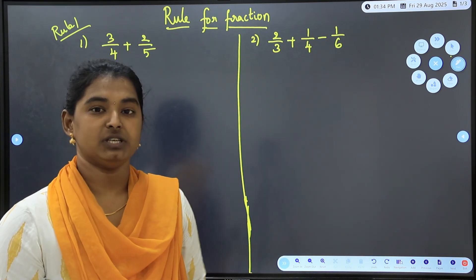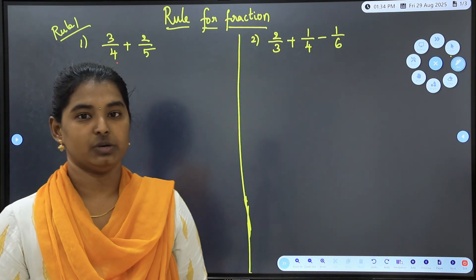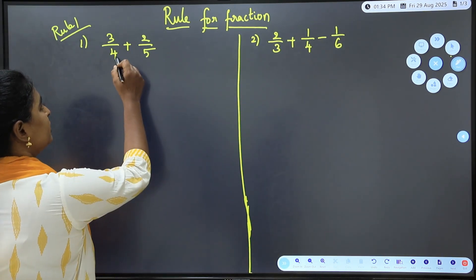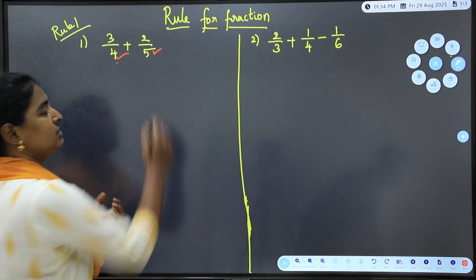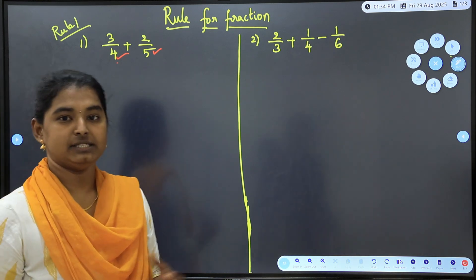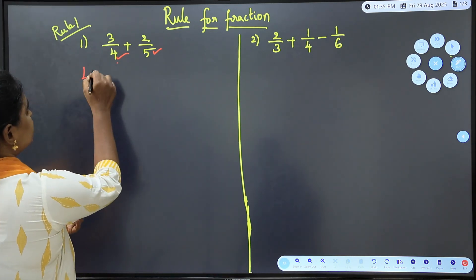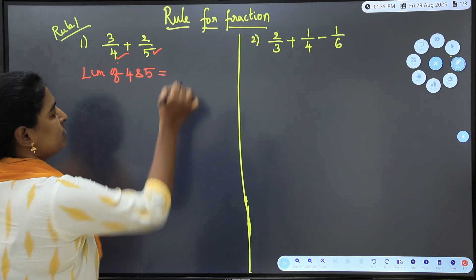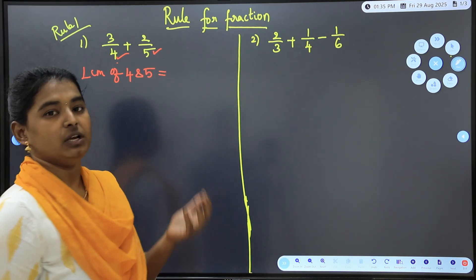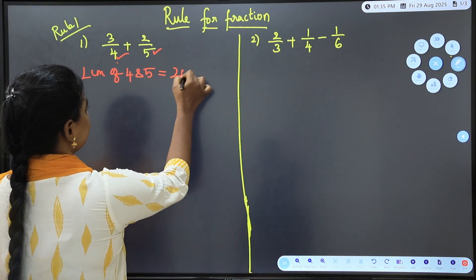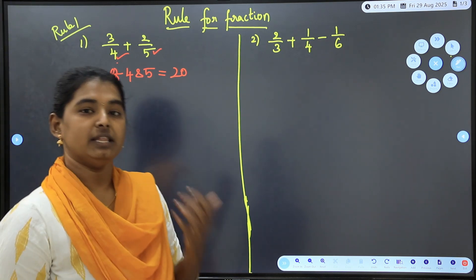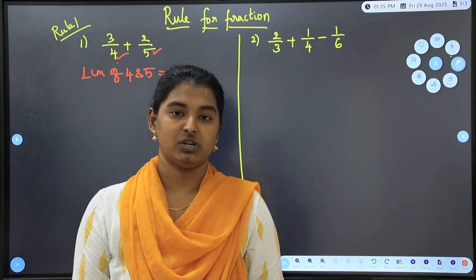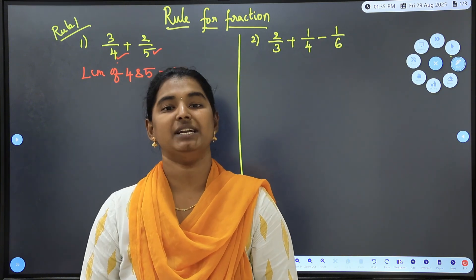There are two methods: one is the LCM method, another one is the Butterfly method. The LCM method is already known. We find the LCM of the denominators — for example, LCM of 4 and 5 is 20 — to make the denominators the same.